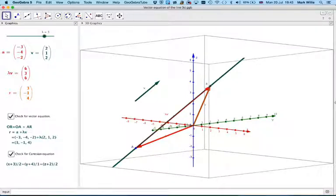If you wanted to look at the vector equation, R will be equal to A, some point on the line, and it can be any point which is on the line. I've just chosen this one to start with, plus lambda of V, (2, 1, 2) in this case.